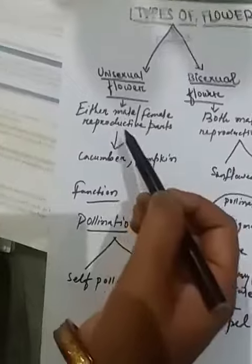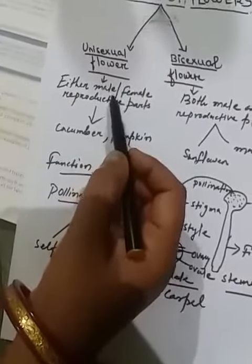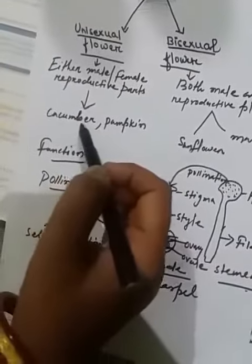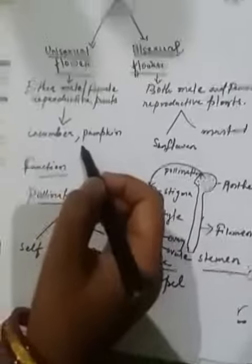The unisexual flower means that some plants have either male or female reproductive parts. Examples are cucumber, pumpkin, and watermelon.